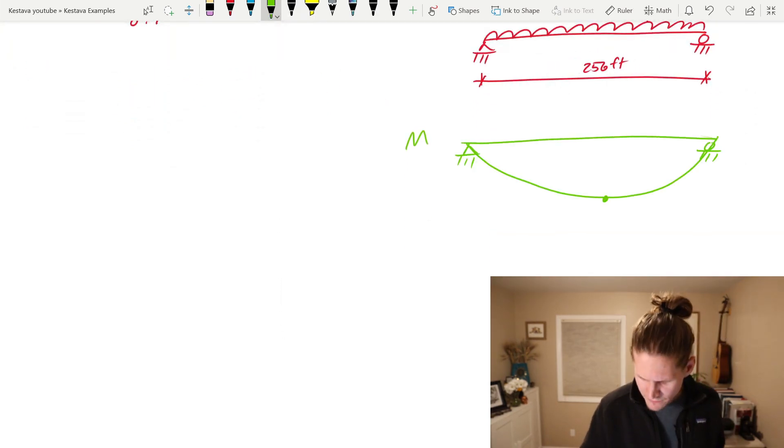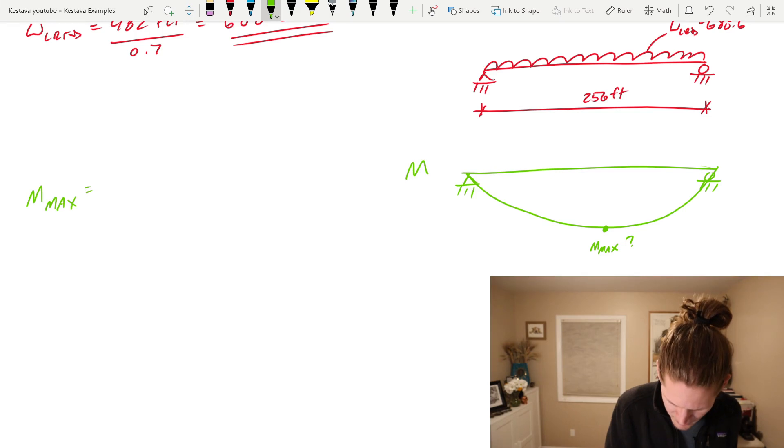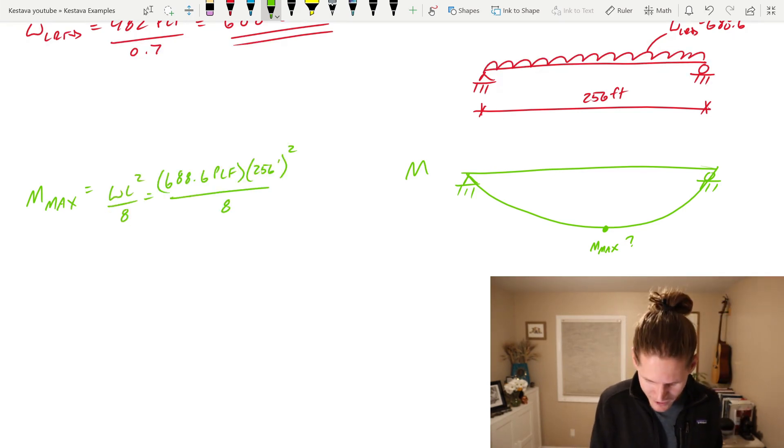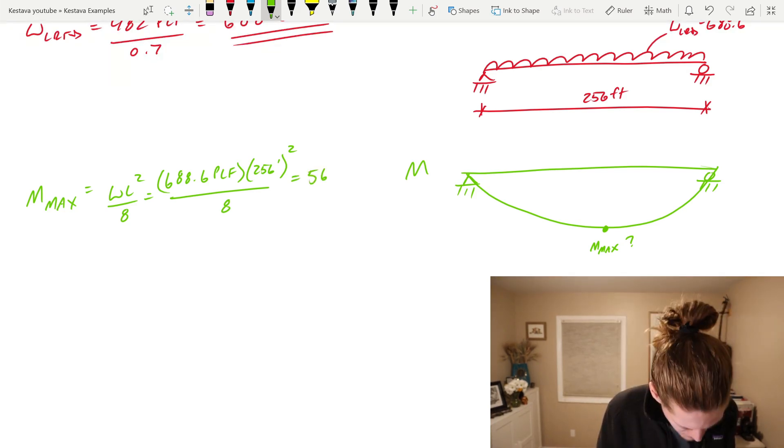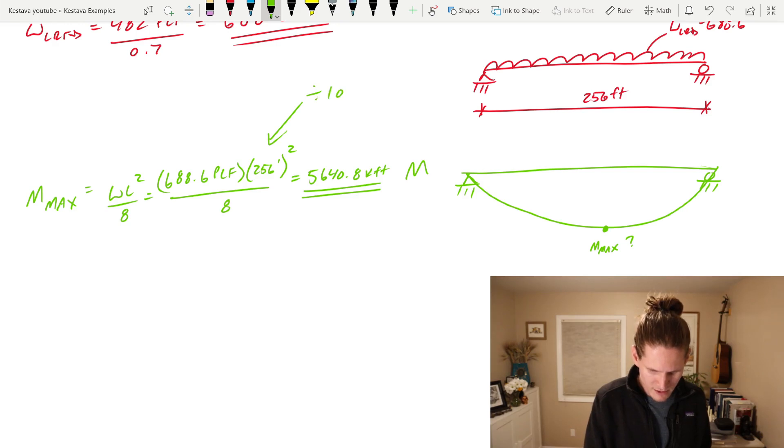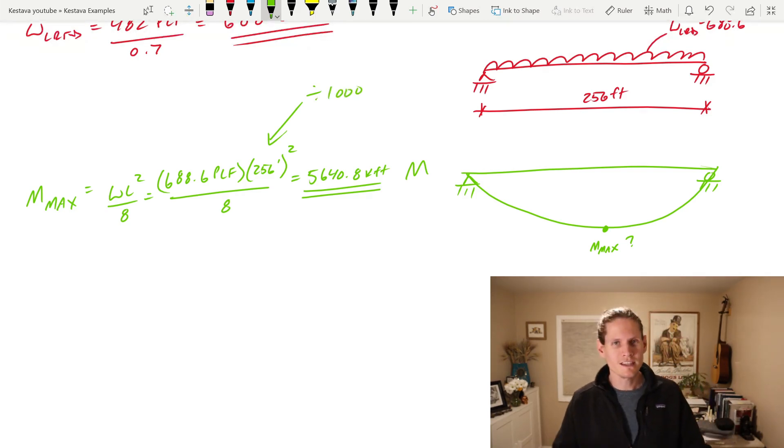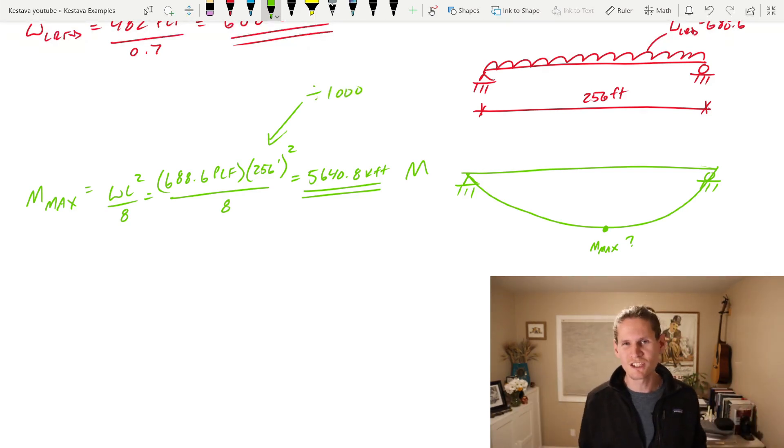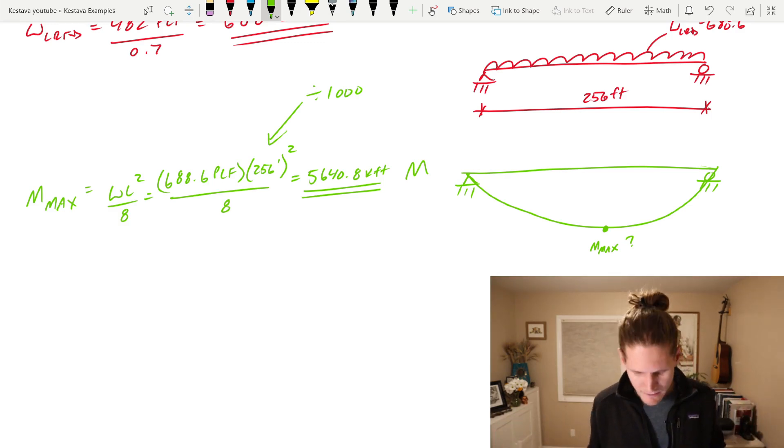We first need to find M max. M max is equal to WL squared over 8. With everything plugged in, which gets us a total max moment of 5,640.8. Remember to divide by 1,000 when you run this equation. Divide by 1,000 because that gets us from pounds into kips. Otherwise your number is going to be huge. Keep track of that.